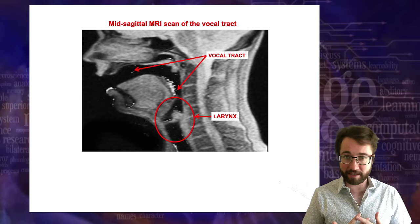Let's practice analyzing English consonants. I'm going to indicate certain consonants on the chart, and I'd like you to figure out the features — the place of articulation, manner of articulation, and voicing. You specify them by convention in this order: voicing, then place of articulation, then manner. So you'd say something like 'a voiced bilabial stop.'